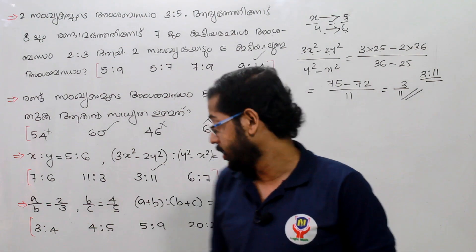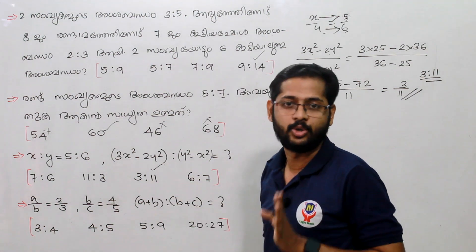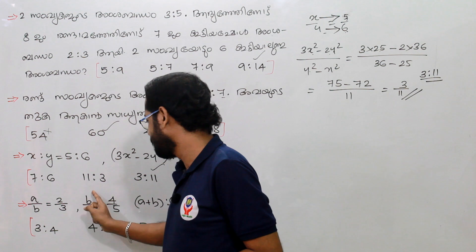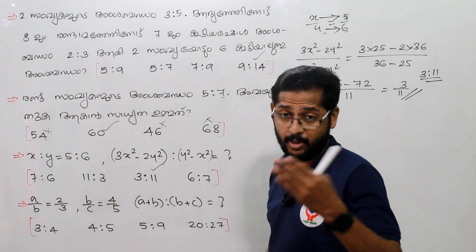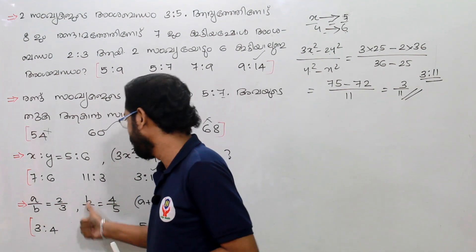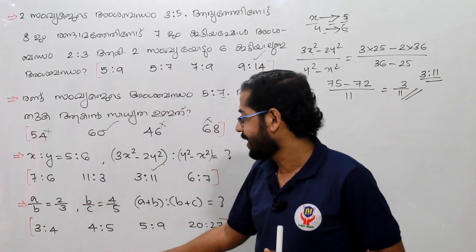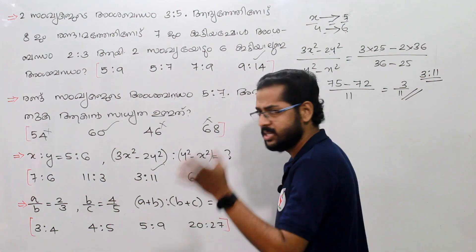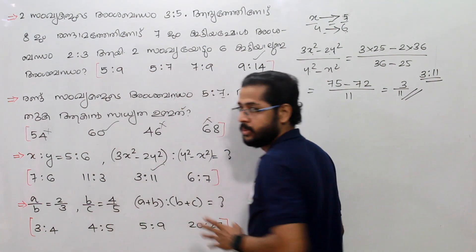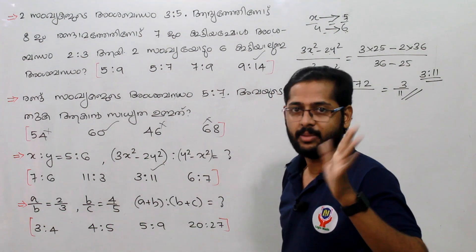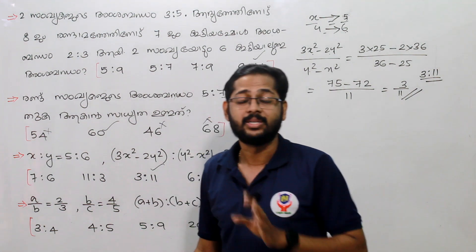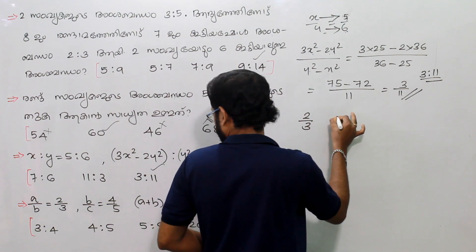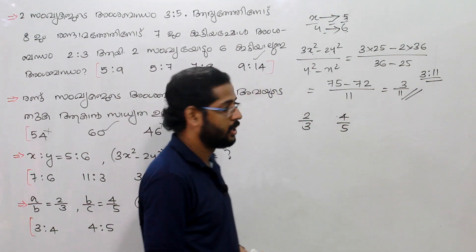How about this method? We can take this one. If A by B is equal to 2 by 3, and A by B is equal to 4 by 5, and A plus B is equal to B plus C — in this case, A value is 2 and B value is 3. This method is the same. How about 2 by 3? One ratio. How about 4 by 5?